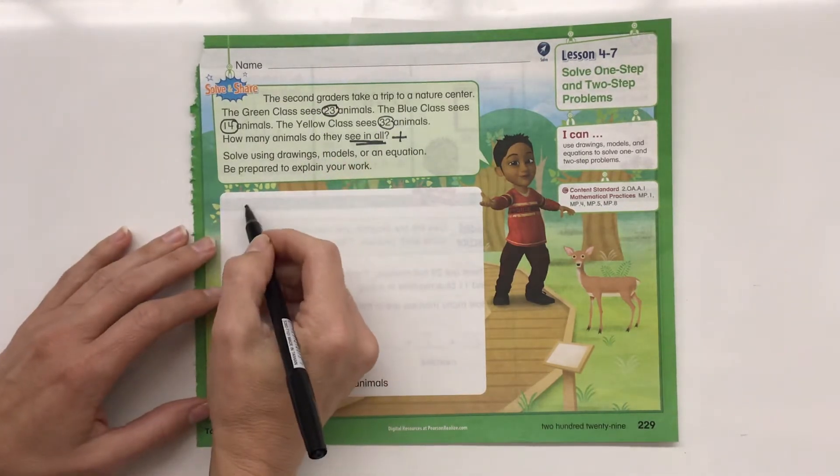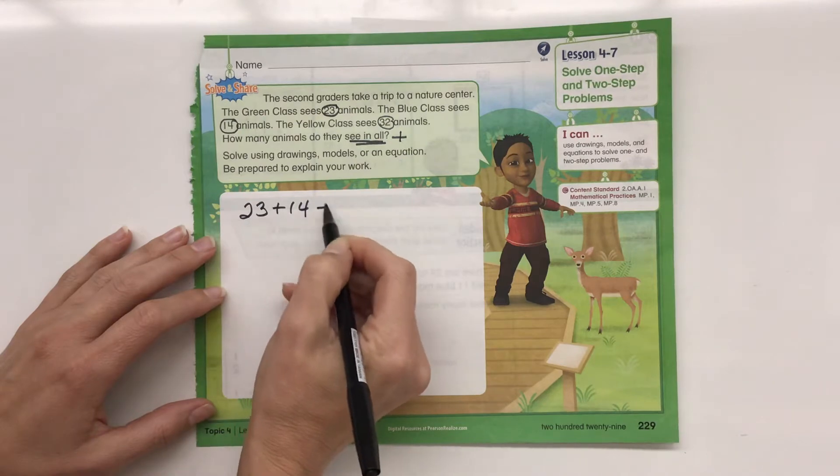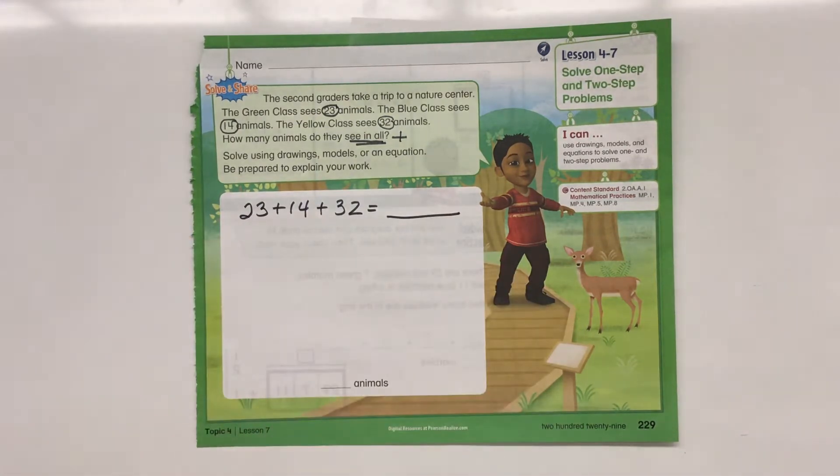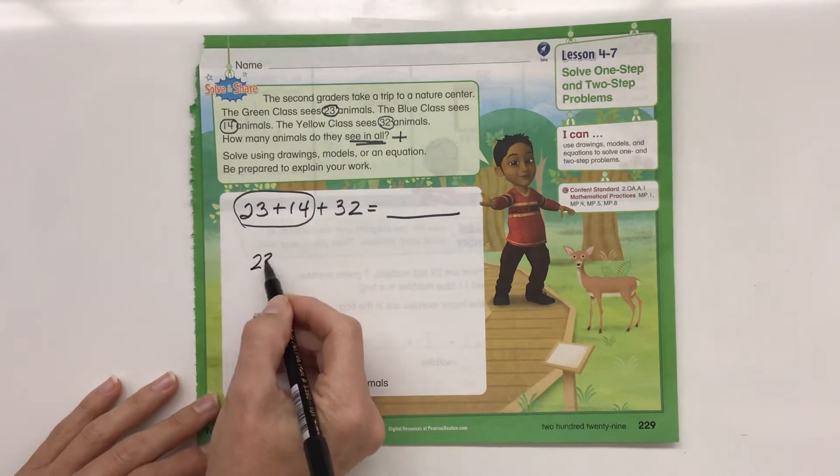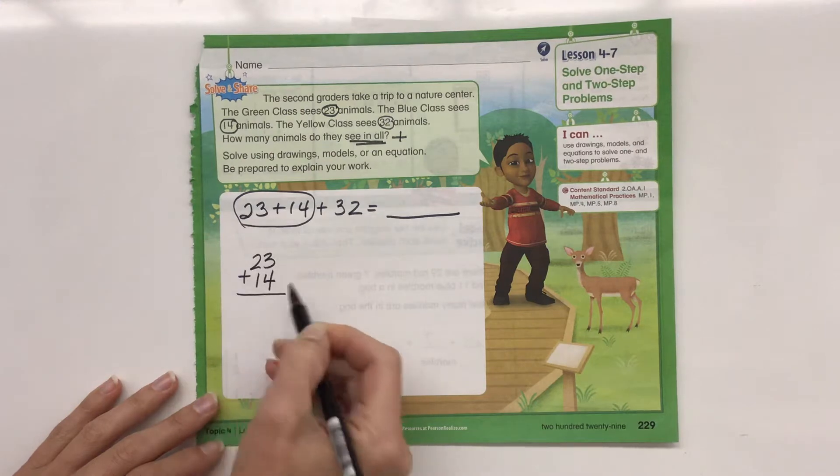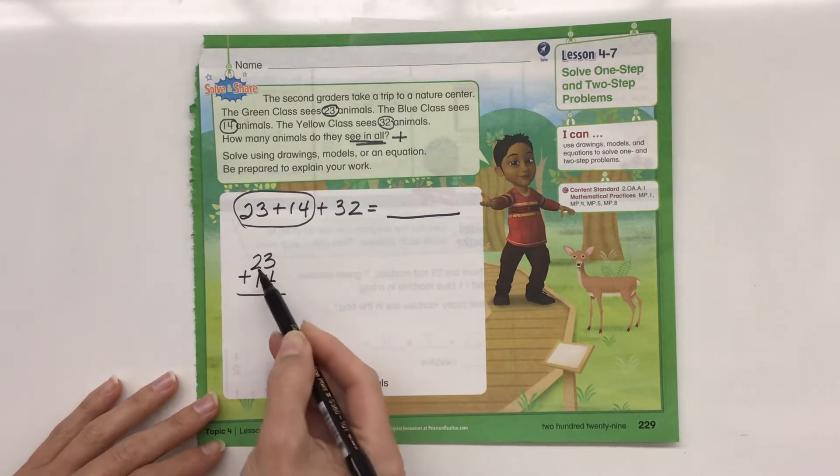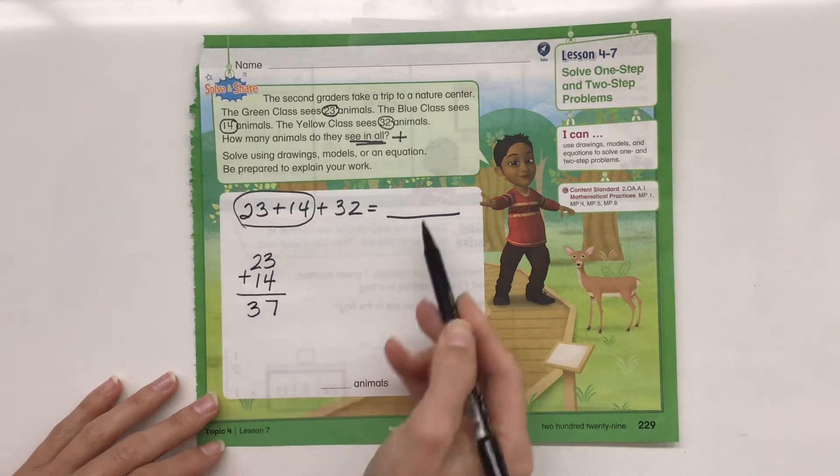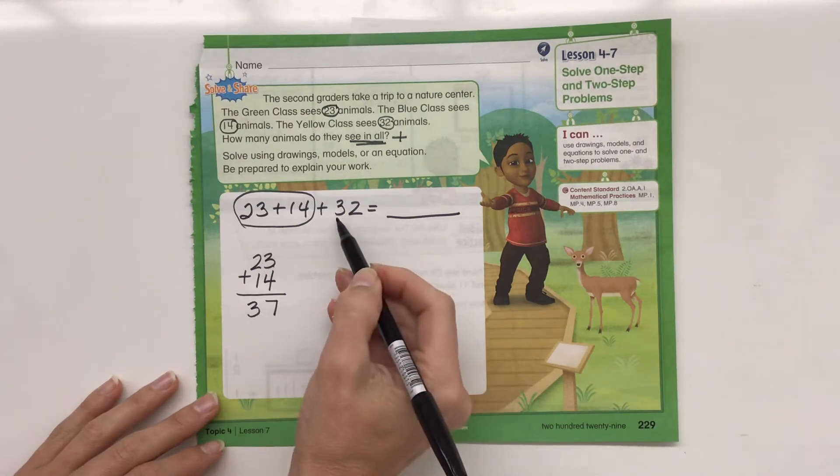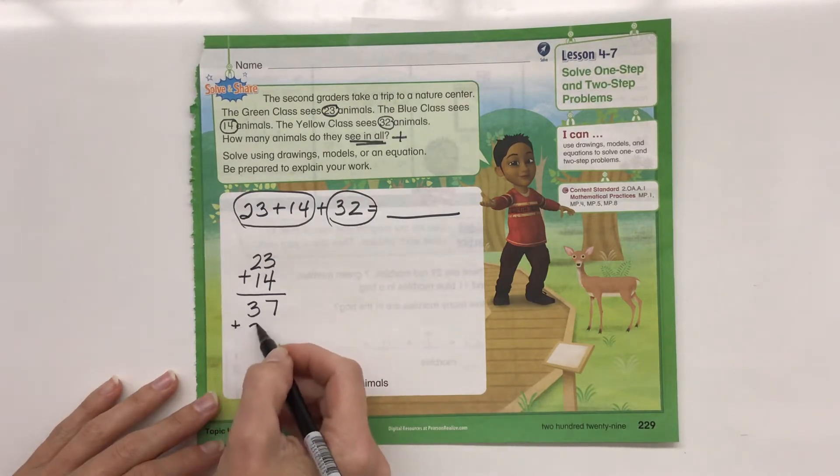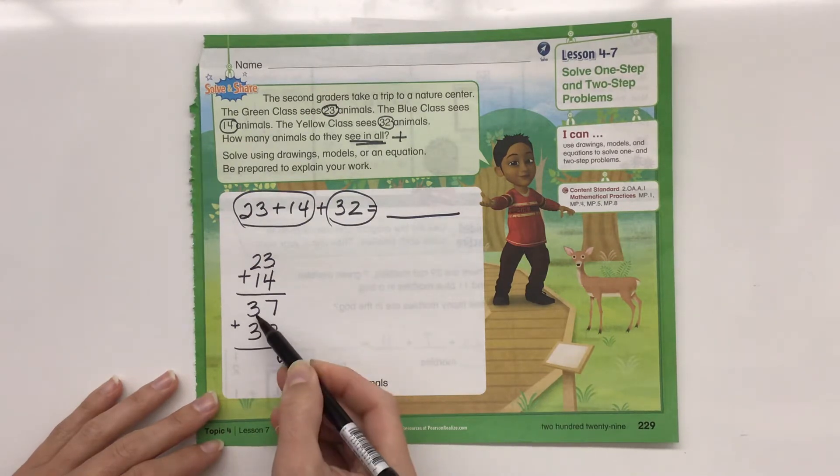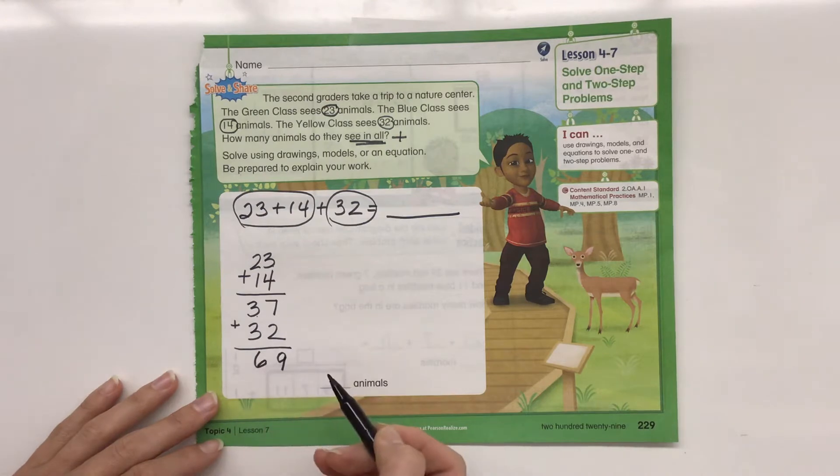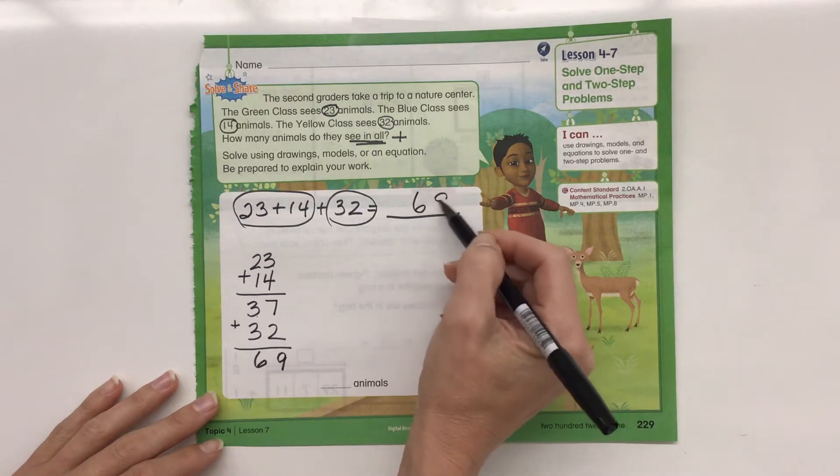We're really asking 23 plus 14 plus 32 equals what? I'm going to stack them and add them. So I'm going to add the first two together. 23 plus 14. 3 plus 4 is 7 and 2 plus 1 is 3. Is my answer 37? No, because we still need to add this over here. Plus 32. 7 plus 2 is 9 and 3 plus 3 is 6. So we get a total of 69 animals.